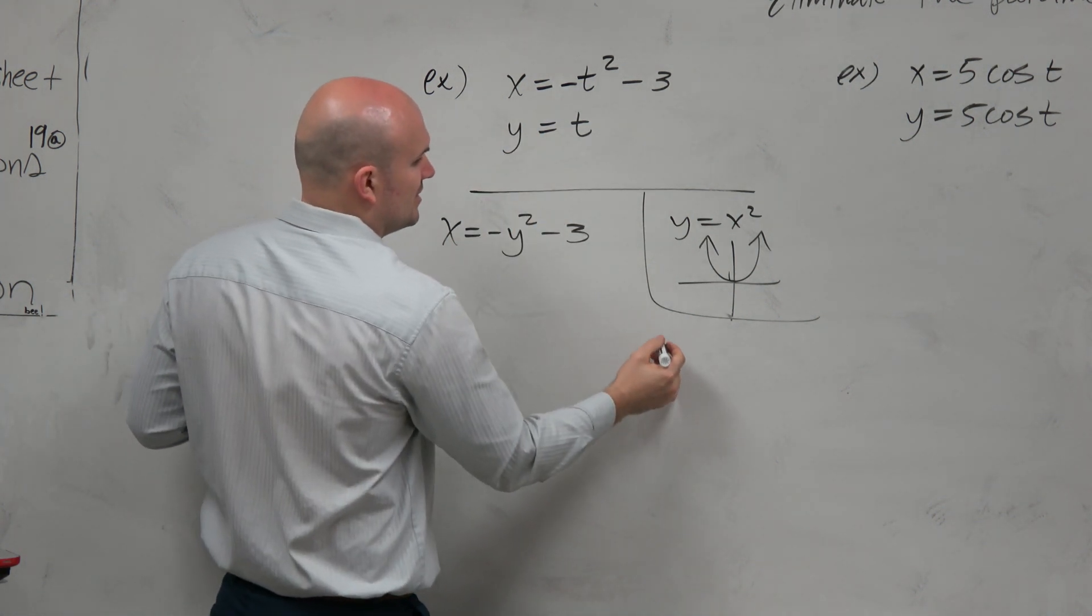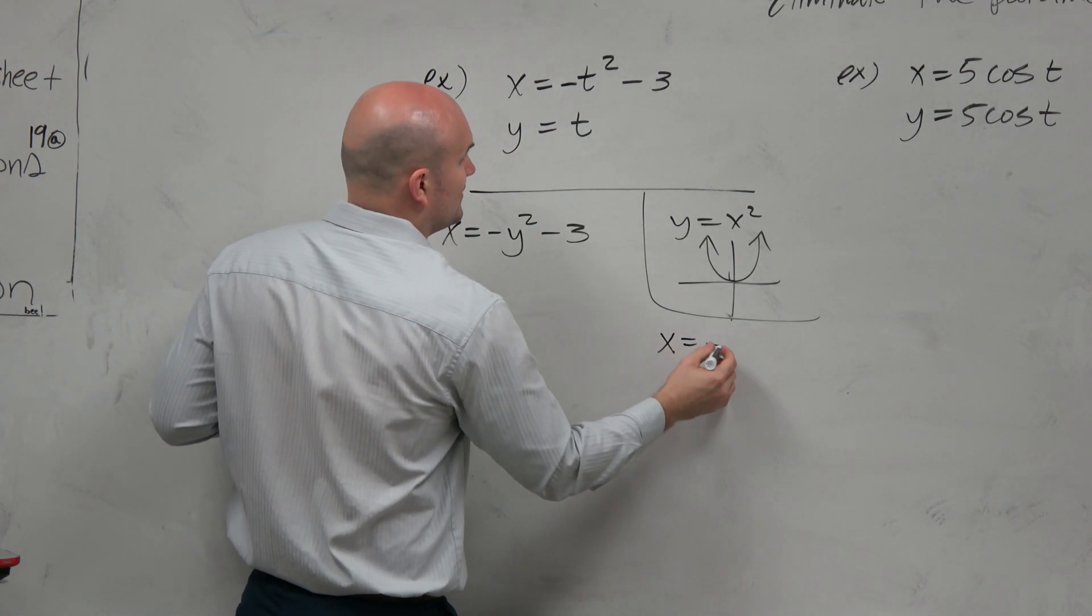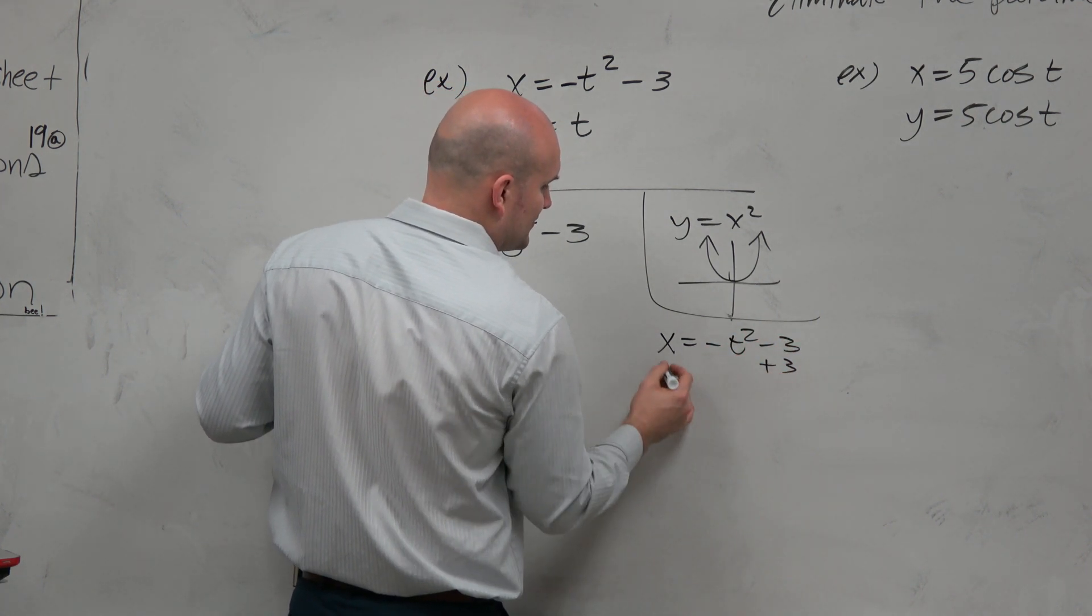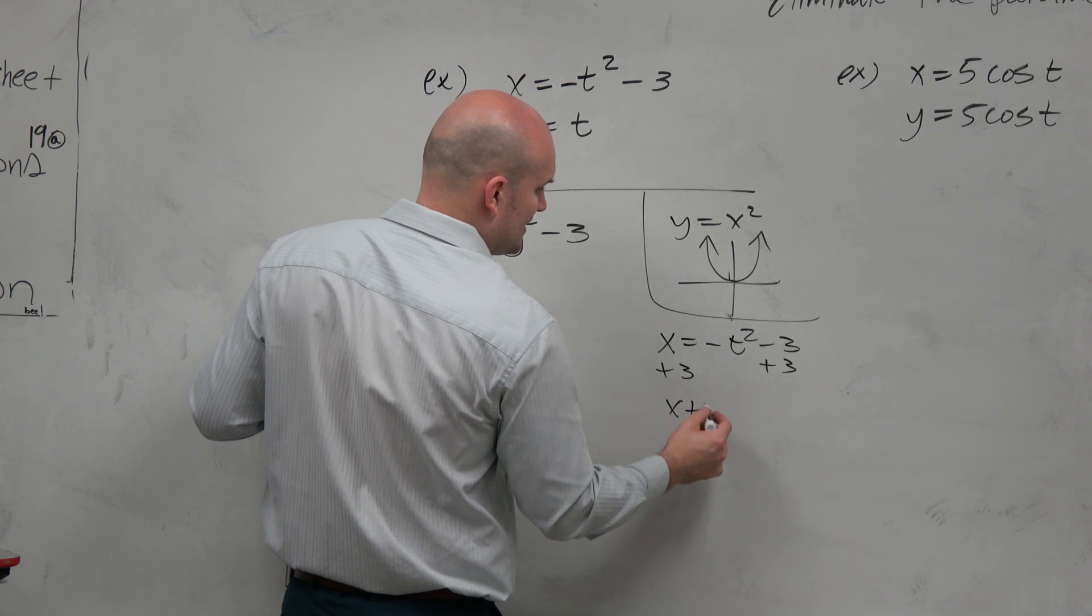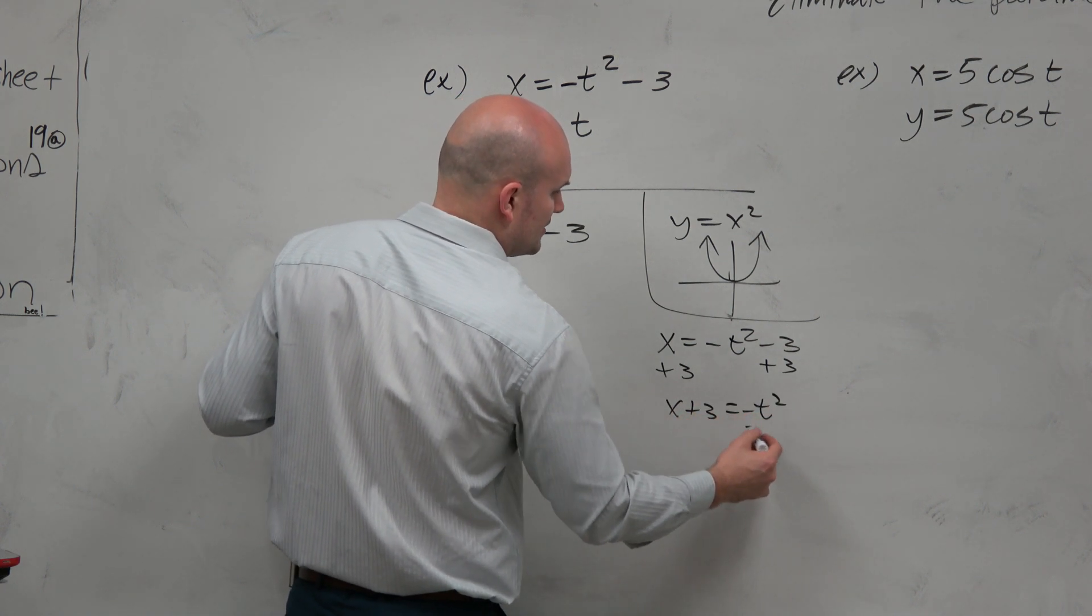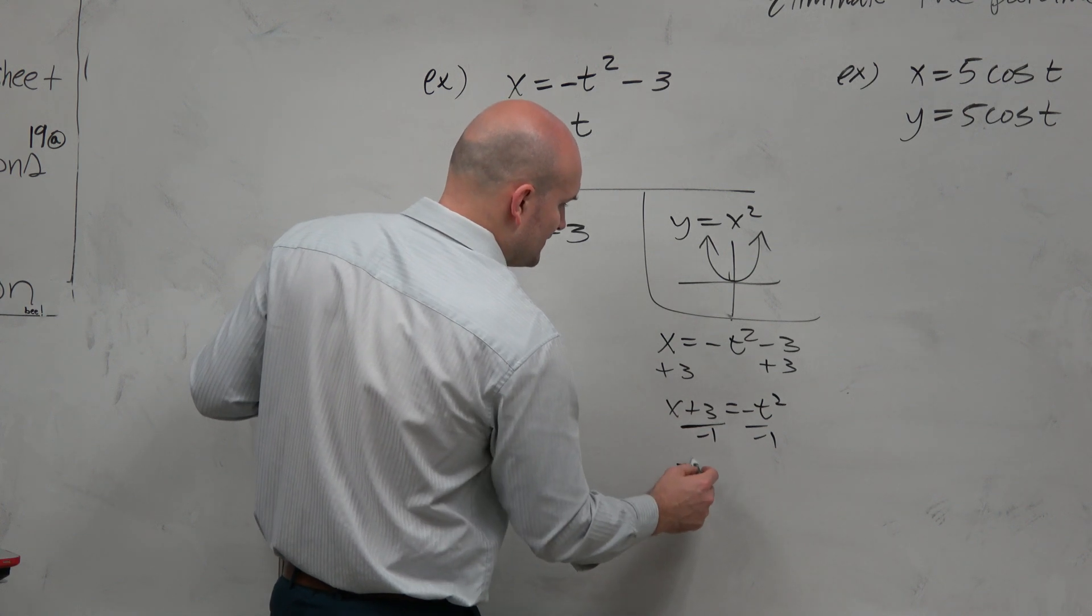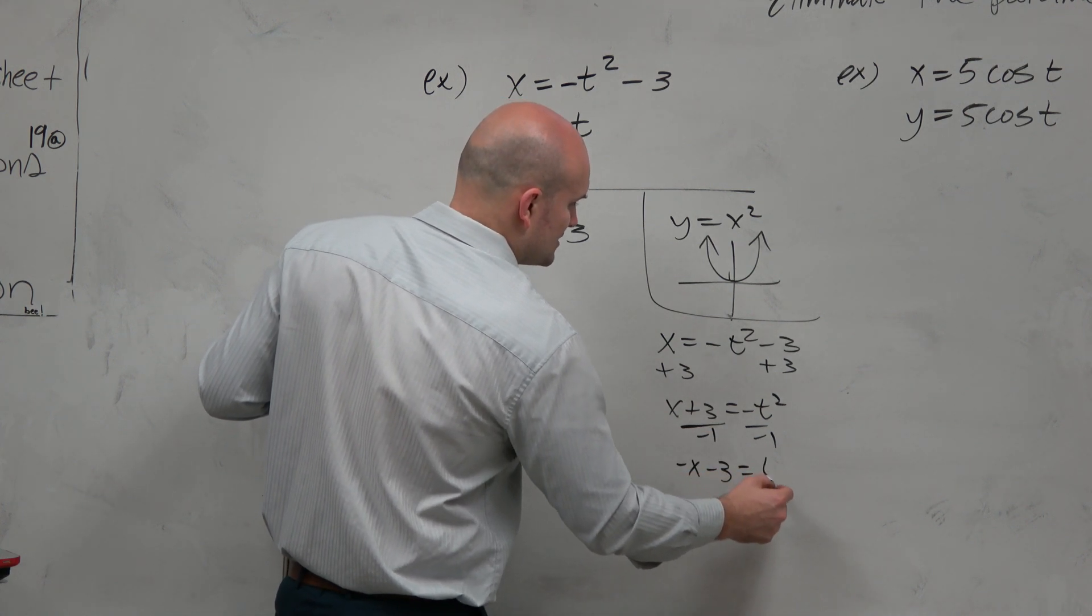Just to give you context here, what if we did solve this? We'd add 3 to the other side, so we'd have x + 3 = -t². Divide by negative 1, divide by negative 1. So we have -x - 3 = t².